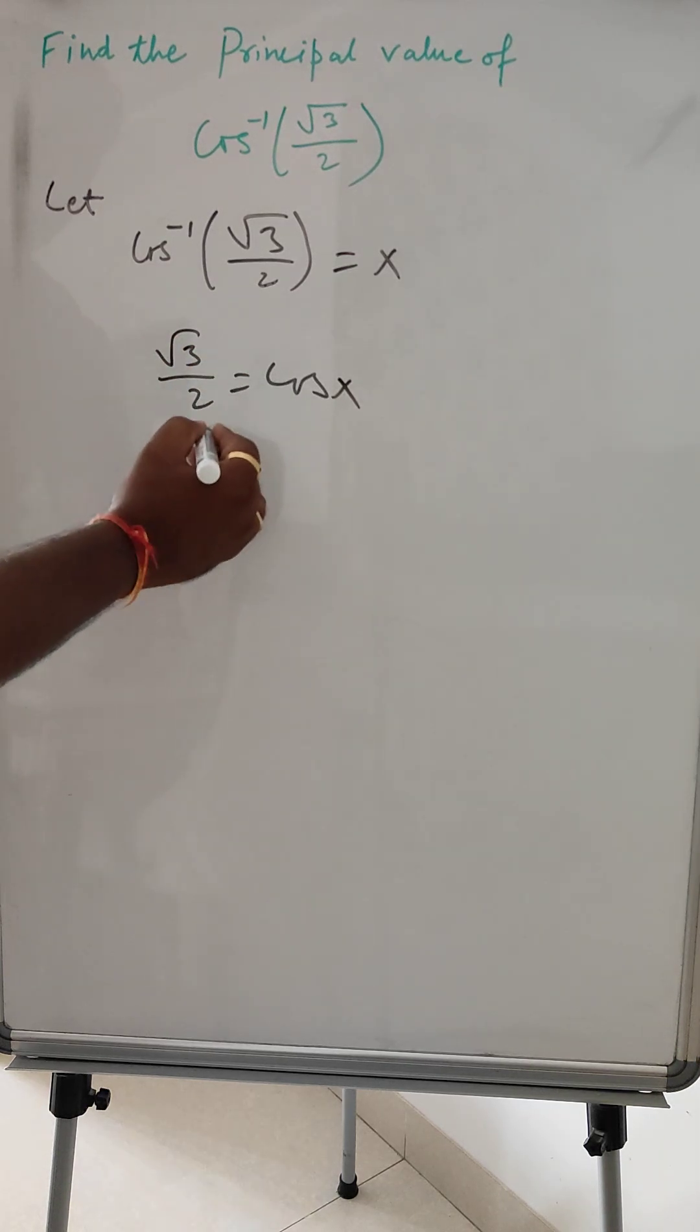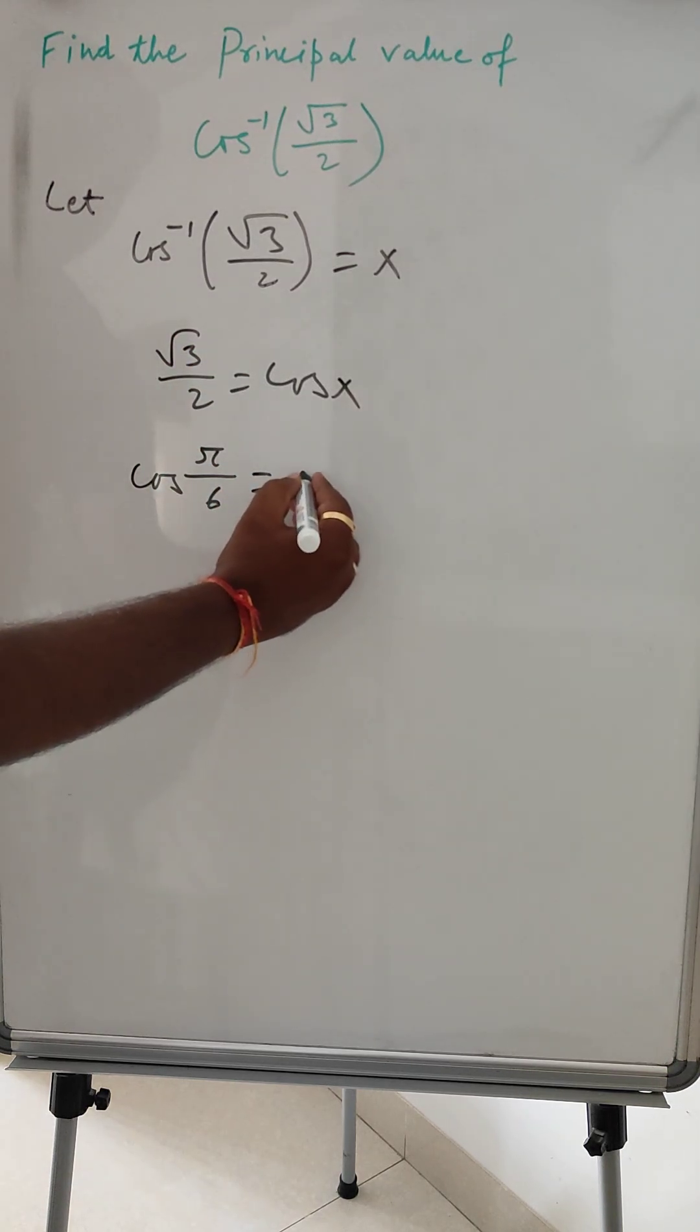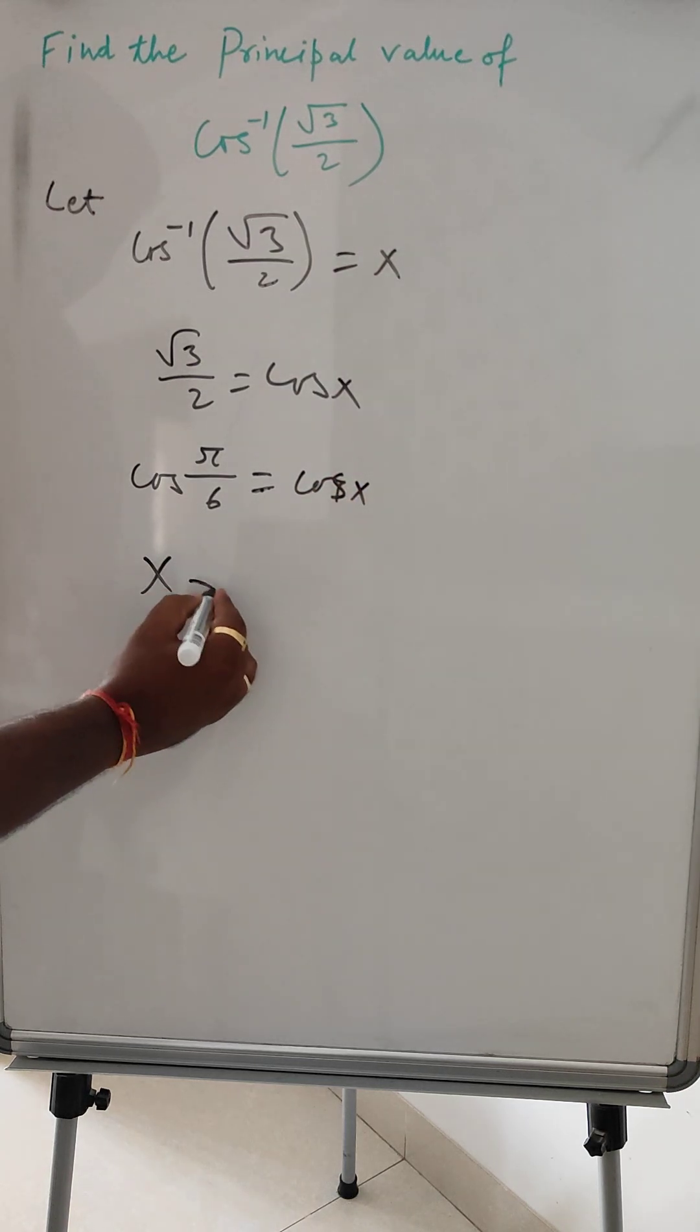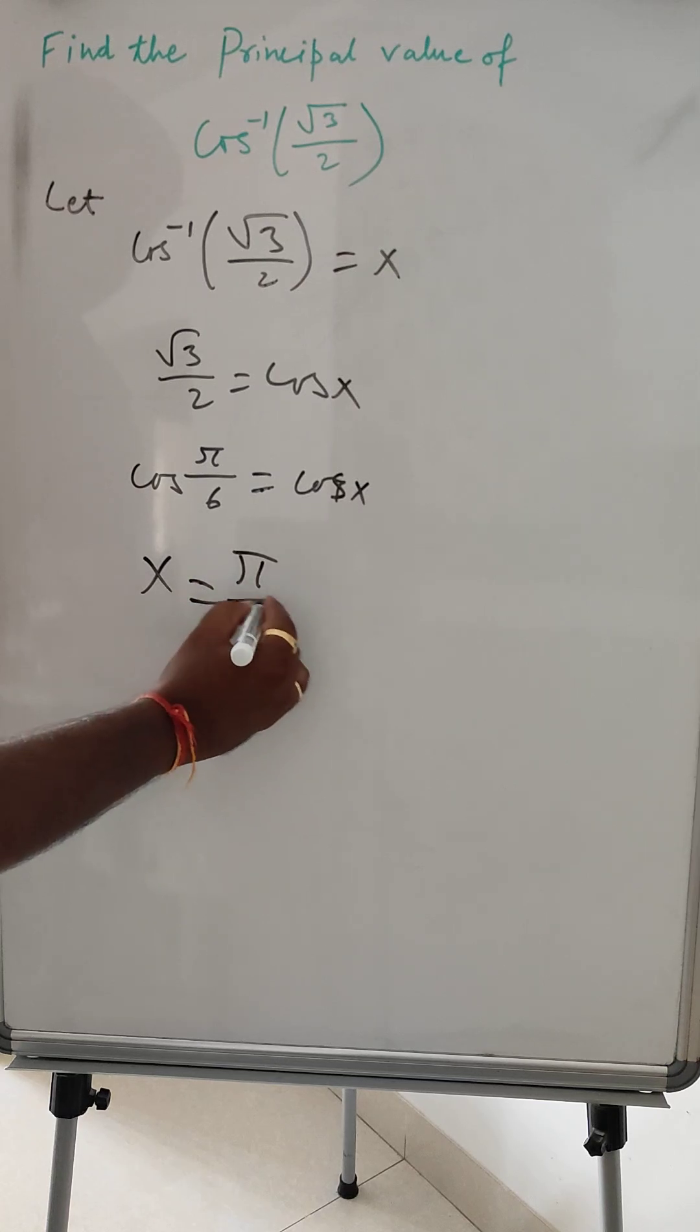So cos(π/6) equals √3/2. We can write cos(π/6) equals cos x, therefore x equals π/6.